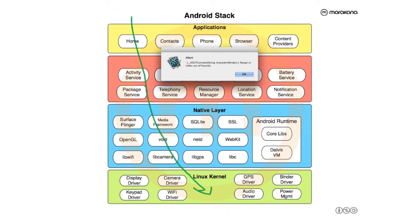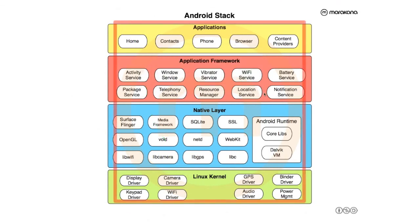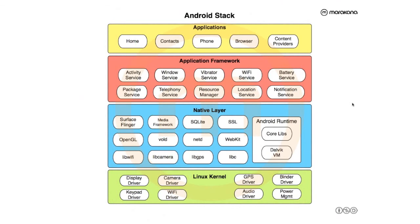One thing I want to point out from this picture: I hope most of you are familiar with the idea that applications essentially run in separate processes, and that they communicate to services mostly through Binder. Binder is this IPC mechanism that Android provides in the form of a kernel driver. The services do talk to each other, most of which run inside of this system server process. Others may run in other processes, like the media server, which we'll touch upon later on.